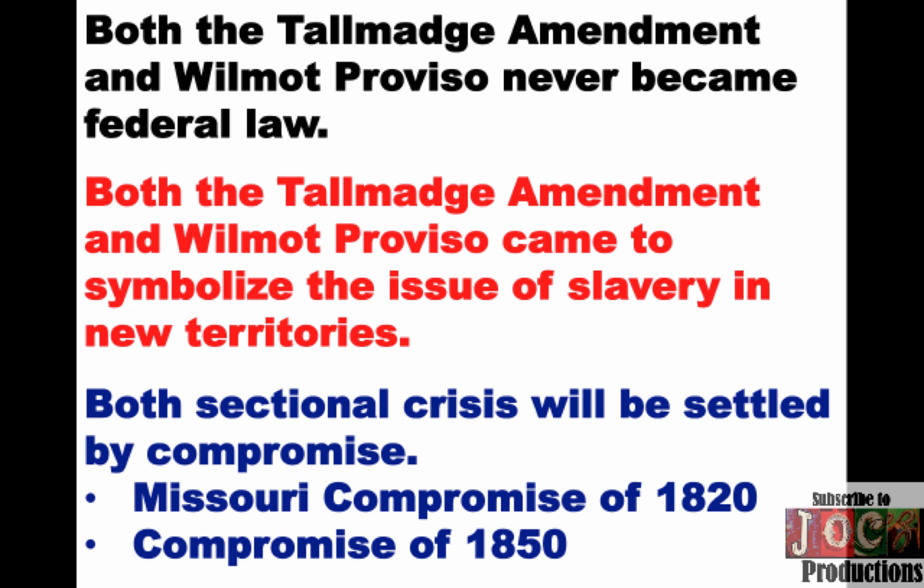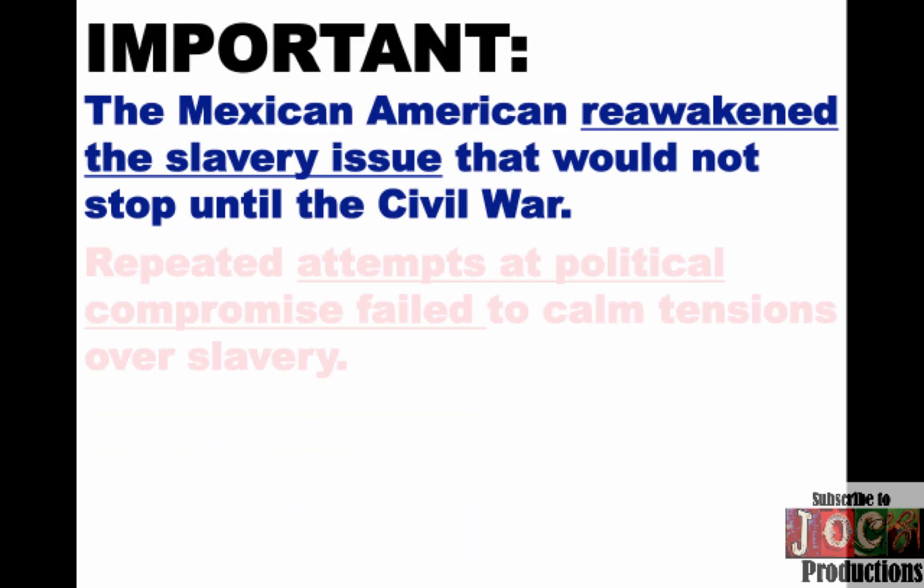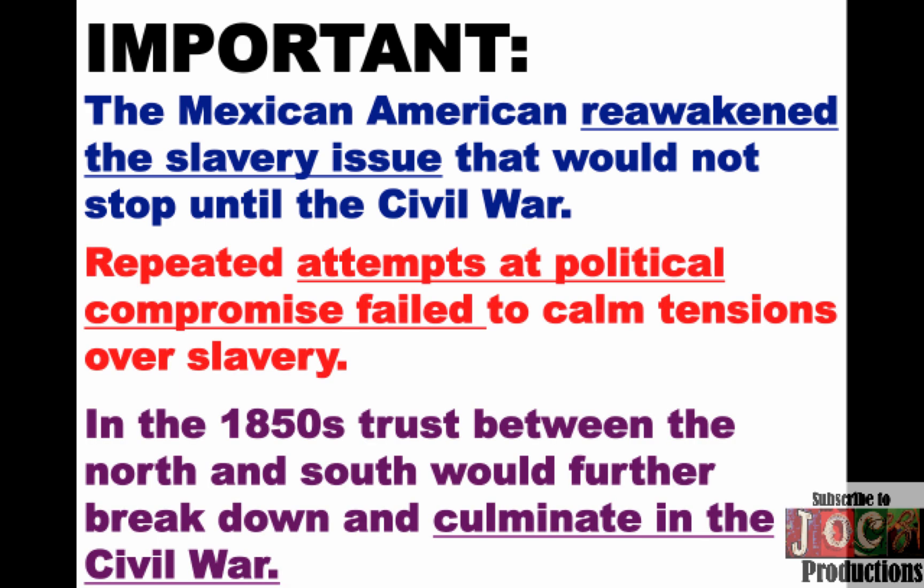The thing you need to keep in mind is the Mexican-American War kind of reignites this debate over slavery, and it's not going to stop until the Civil War. You're going to see repeated attempts at compromise, but ultimately those attempts — the Compromise of 1850, the Kansas-Nebraska Act — are going to fail to calm tensions. And in the 1850s, trust between the North and the South would further break down and culminate in the Civil War.